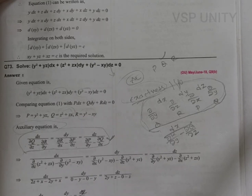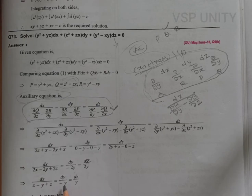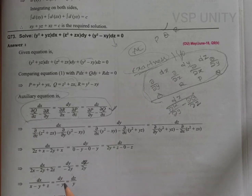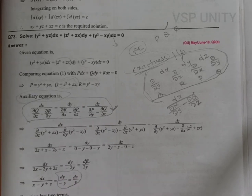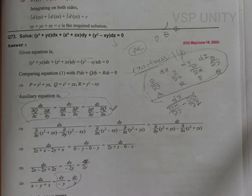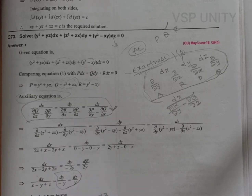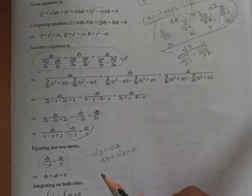We now have three expressions. From the auxiliary equation, we take two pairs. Equating the second and third terms: dy/(−y) = dz/y, so y cancels and we get −dy = dz, meaning dy + dz = 0.